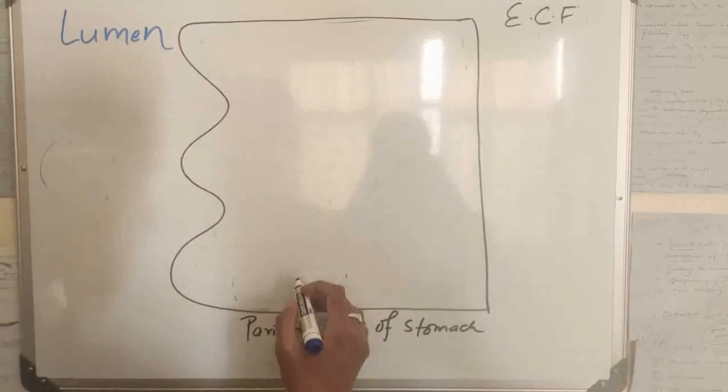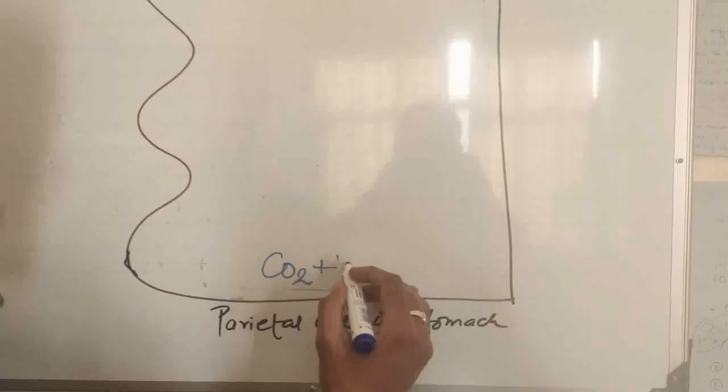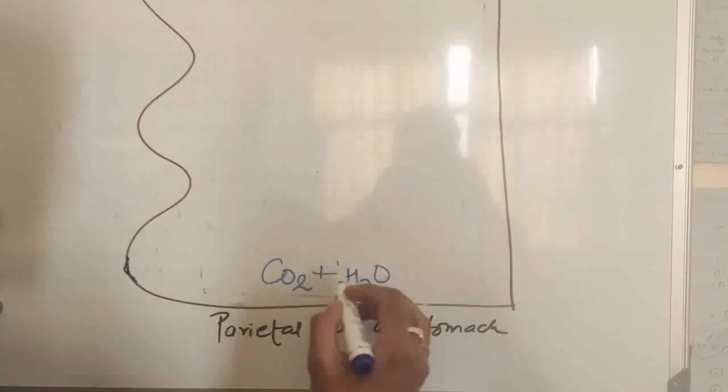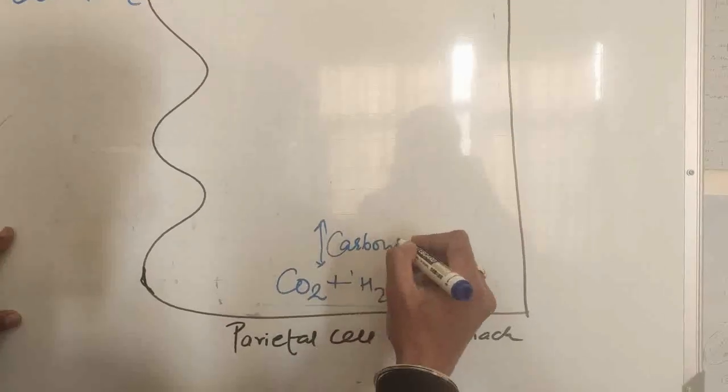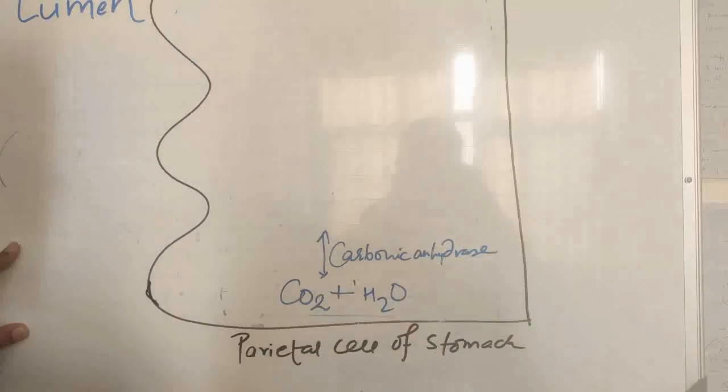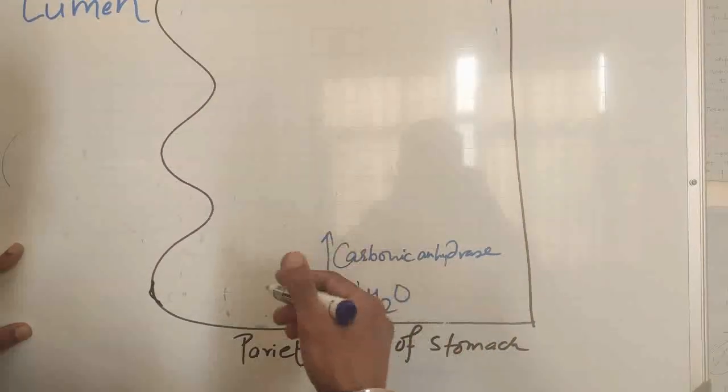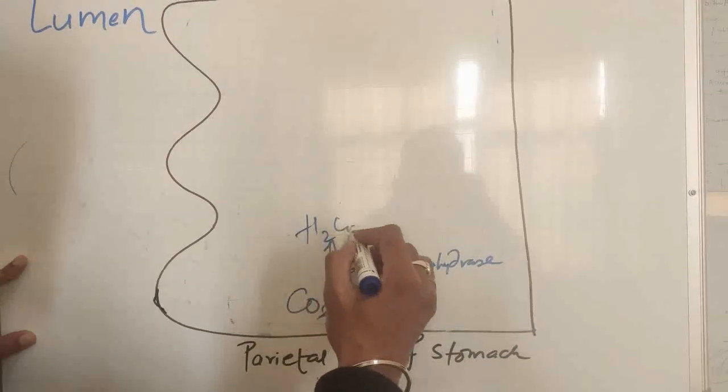Carbon dioxide gas, which is a product of metabolism in our cells, reacts with water molecules in the presence of carbonic anhydrase enzyme. This is a reversible reaction. It forms carbonic acid.